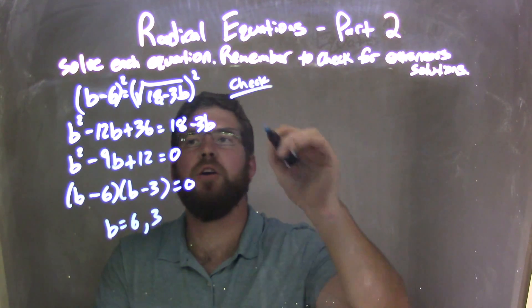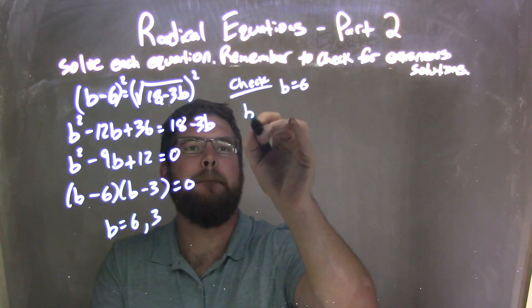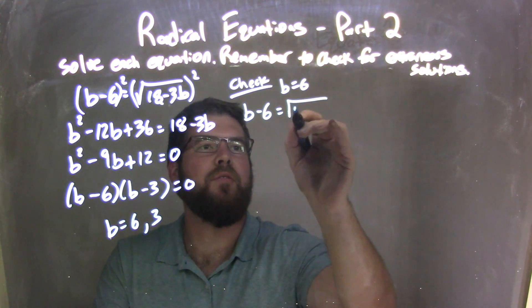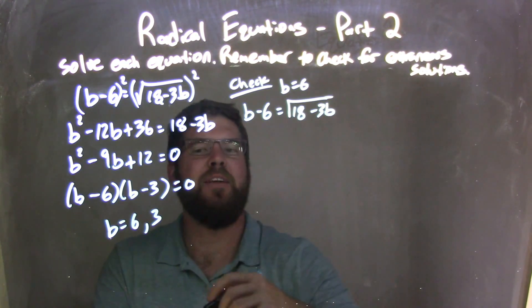Check, check it out. So let's do the first one, b equals 6. So we have b minus 6 equals the square root of 18 minus 3b, okay? Let's plug 6 in for b.